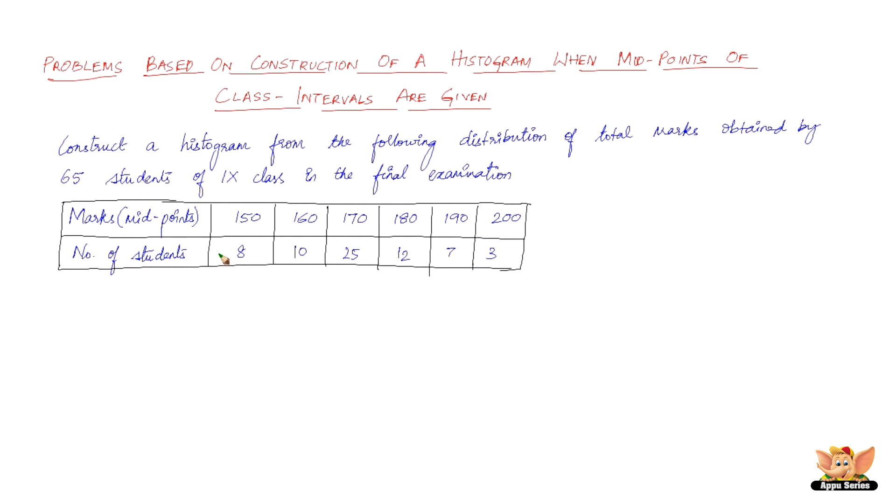Because that is what is h, the difference between the second and the first midpoint. So therefore we get h equals 160 minus 150, which is equal to 10.